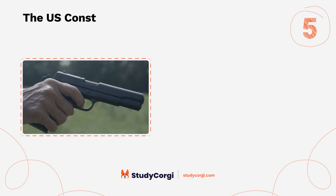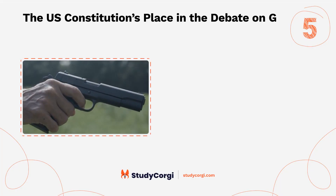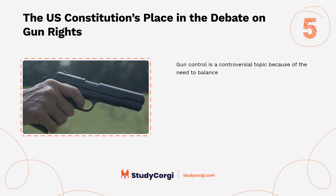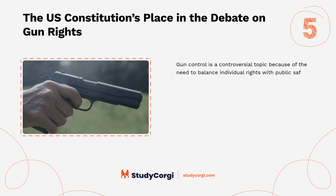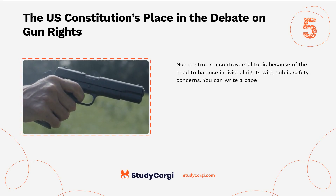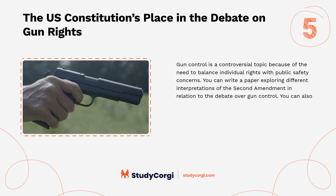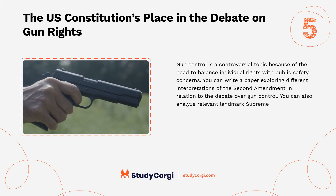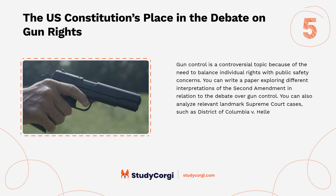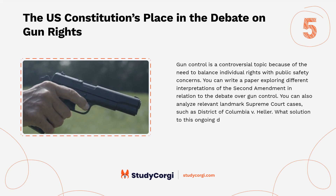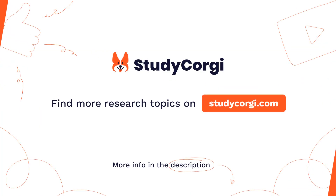The U.S. Constitution's place in the debate on gun rights: gun control is a controversial topic because of the need to balance individual rights with public safety concerns. Write a paper exploring different interpretations of the Second Amendment in relation to the debate over gun control, analyzing relevant landmark Supreme Court cases such as District of Columbia v. Heller. What solution to this ongoing debate would you propose? Find more research topics on StudyCorgi.com.